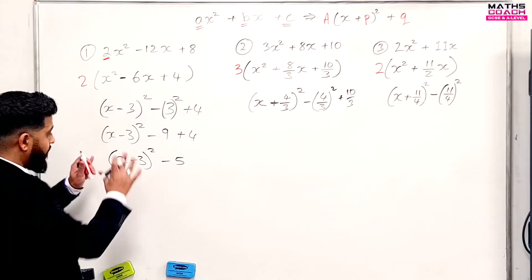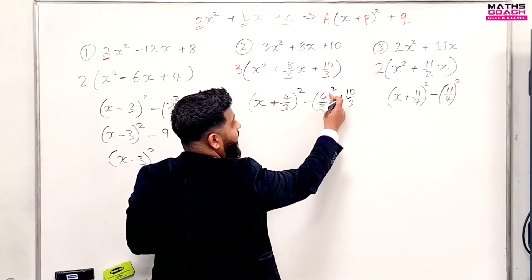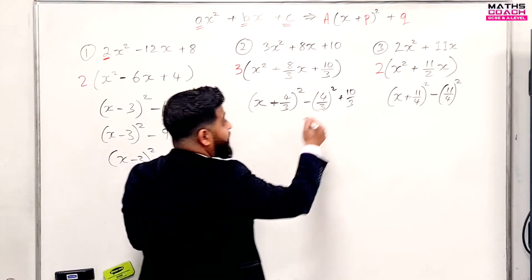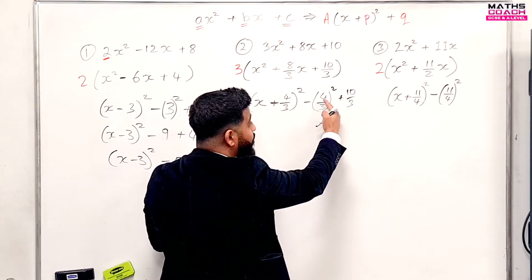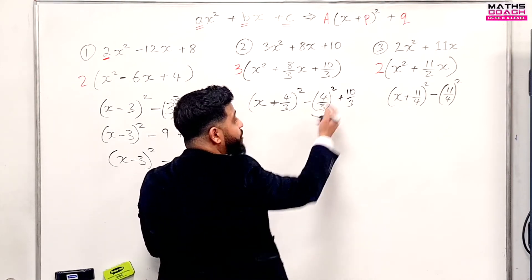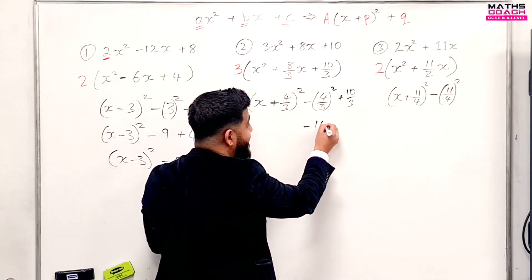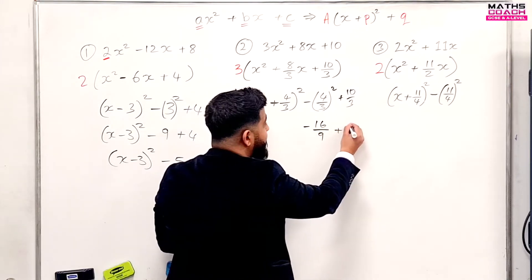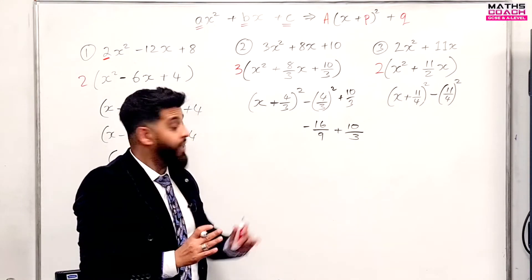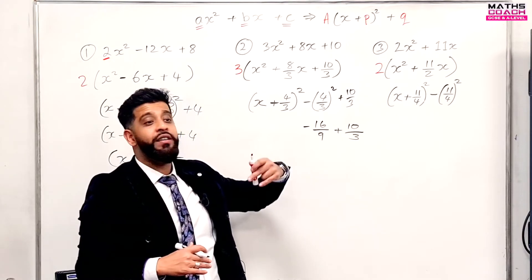We'll come back to that 2 in a second. Let's go and simplify the next one. Here we've got a fraction that we are squaring and simplifying. Now it's very important — what does this square do? It's squaring the whole thing. So it's going to be 4 squared over 3 squared. What is 4 squared? 16. So look — the minus is there, and it's going to be minus 16 over 9, plus 10 over 3. The 10 over 3 is from the original expression. It's really important that you understand fractions because that's when things get trickier — that's when the GCSE grade goes from a 7 to an 8.